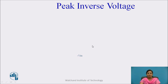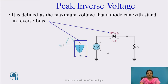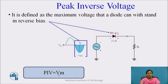Next is peak inverse voltage (PIV). It is defined as the maximum voltage that a diode can withstand in reverse bias. In reverse bias, the current flowing through the load resistance is 0, so 0 voltage appears across the load resistance RL. The entire voltage appears across the diode — that is, minus Vm — and that is the peak inverse voltage. So peak inverse voltage is equal to Vm.